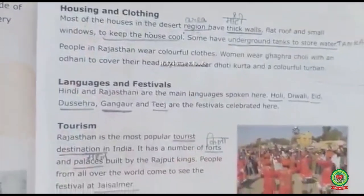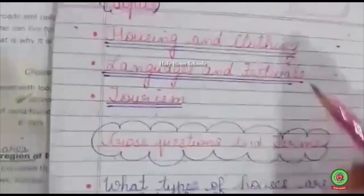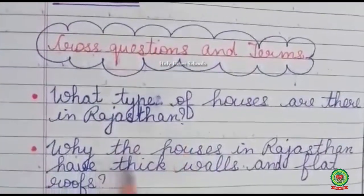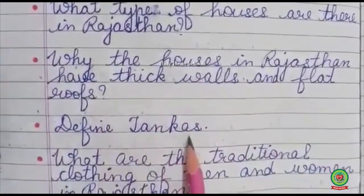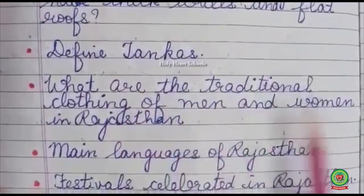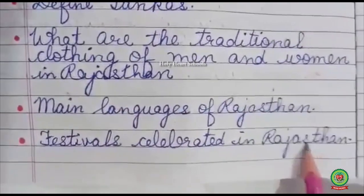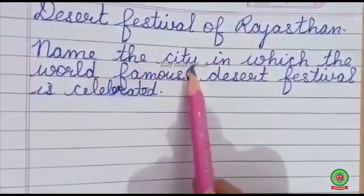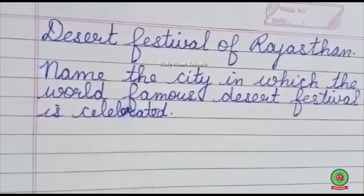We have completed these topics. Let us recall once. The cross questions and terms for these topics are: What type of houses are there in Rajasthan? Why do the houses in Rajasthan have thick walls and flat roofs? Define tankas. What are the traditional clothing of men and women in Rajasthan? Name the languages of Rajasthan. Name the festivals celebrated in Rajasthan. Name the desert festival of Rajasthan and the city where it is celebrated. Children, solve the related exercises.